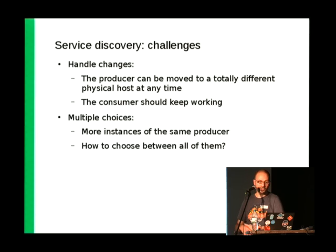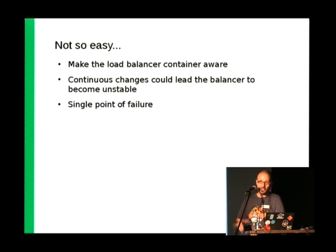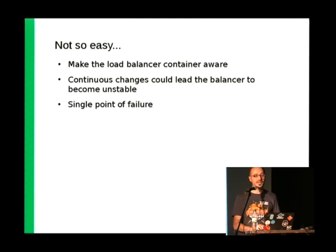Even if you get everything working at startup, how do you handle a sudden move of a producer? If I had killed the MongoDB database, it would have moved to another host with a different IP address, but the guestbook application would still be looking for MongoDB at the old address. And how do you handle multiple backend instances providing the same service? The solution is a load balancer in front of all producers, pointing the consumer to it. However, the load balancer needs to track all container changes from the key-value store and reload config, which can cause unresponsiveness. It's also a single point of failure.